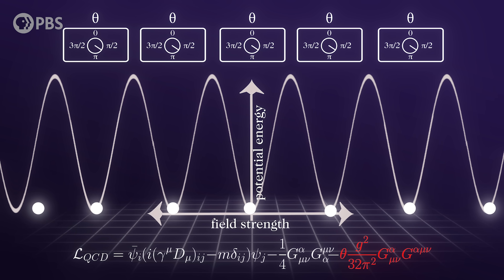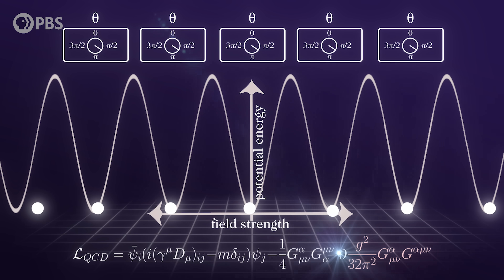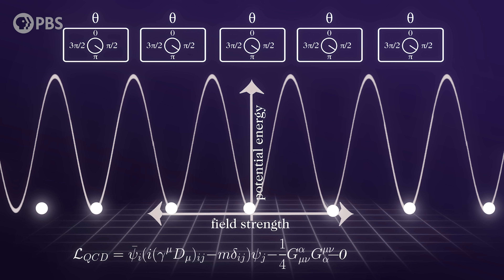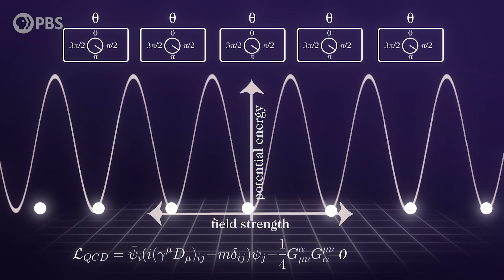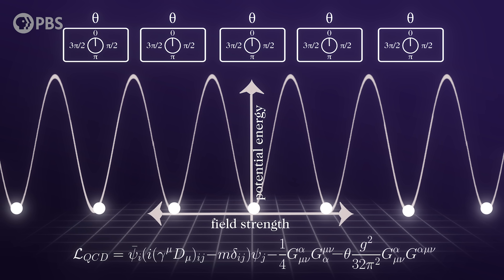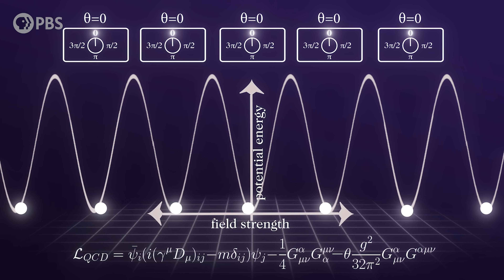And it's these new terms, the ones added by the weird vacuum, that appear to violate CP symmetry. That means the strong force should show CP violation — so why doesn't it? One possible explanation is that this theta value, the constant in front of the CP-violating terms, is just equal to zero. That would cause those terms to vanish.